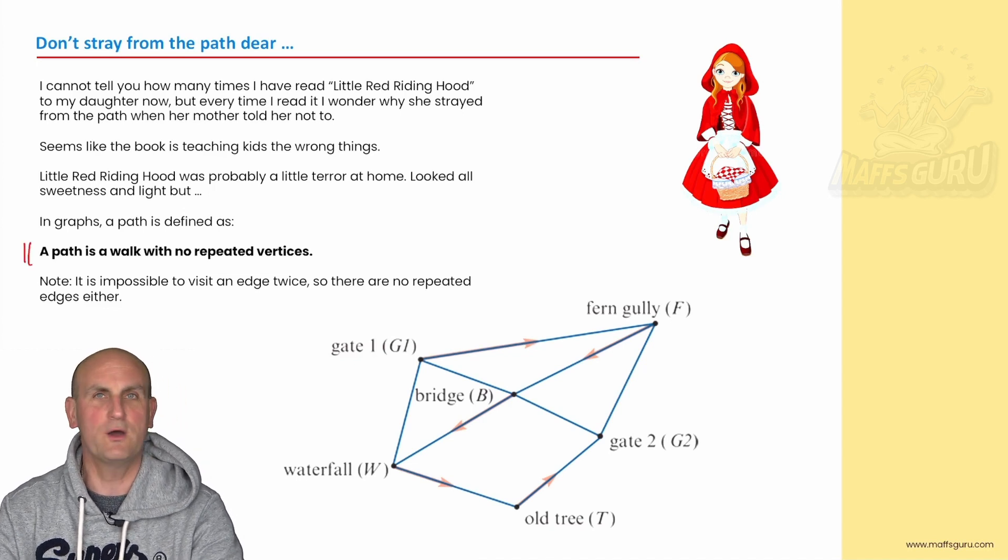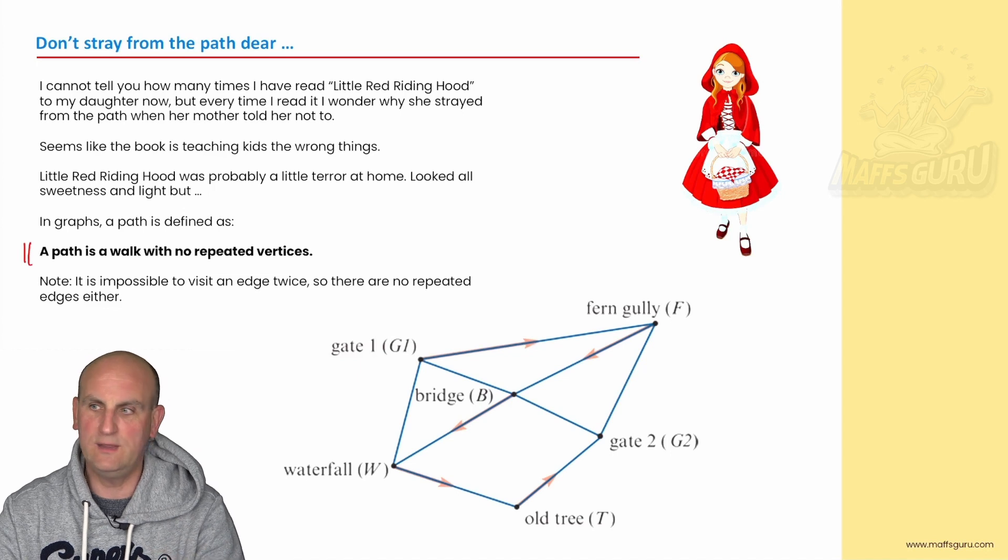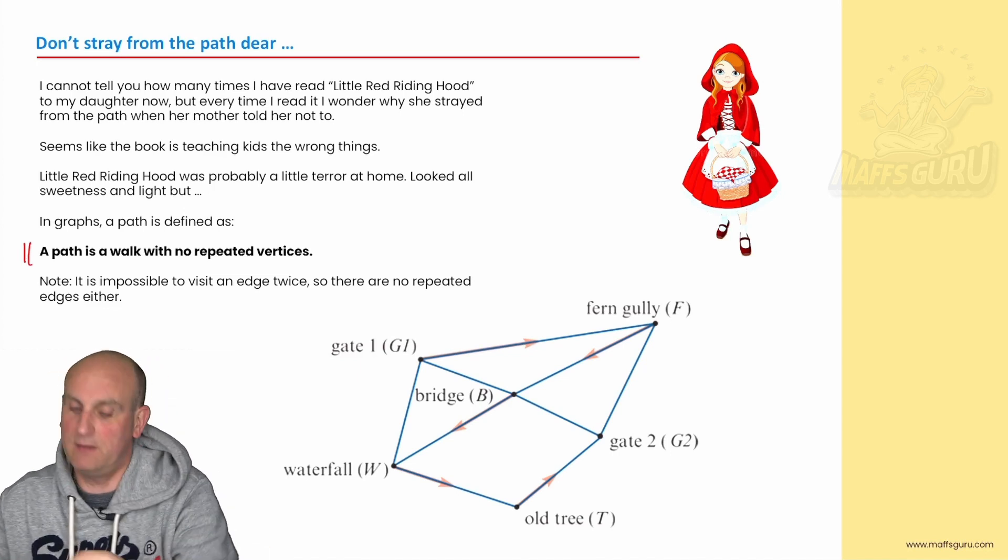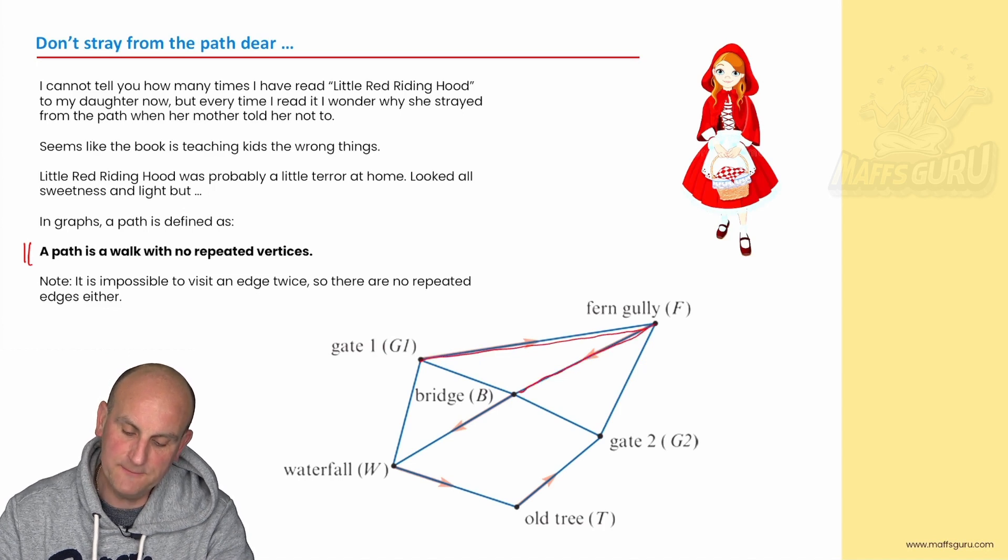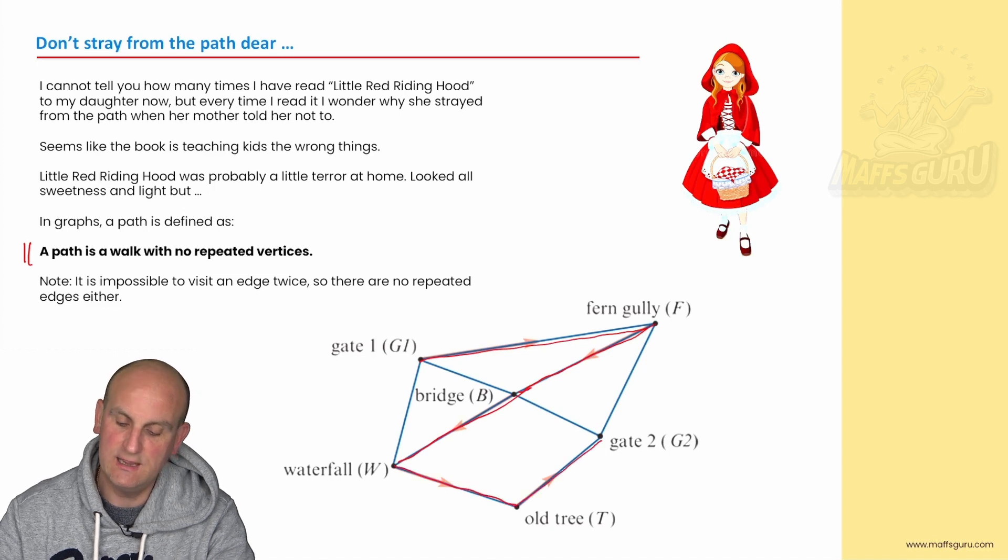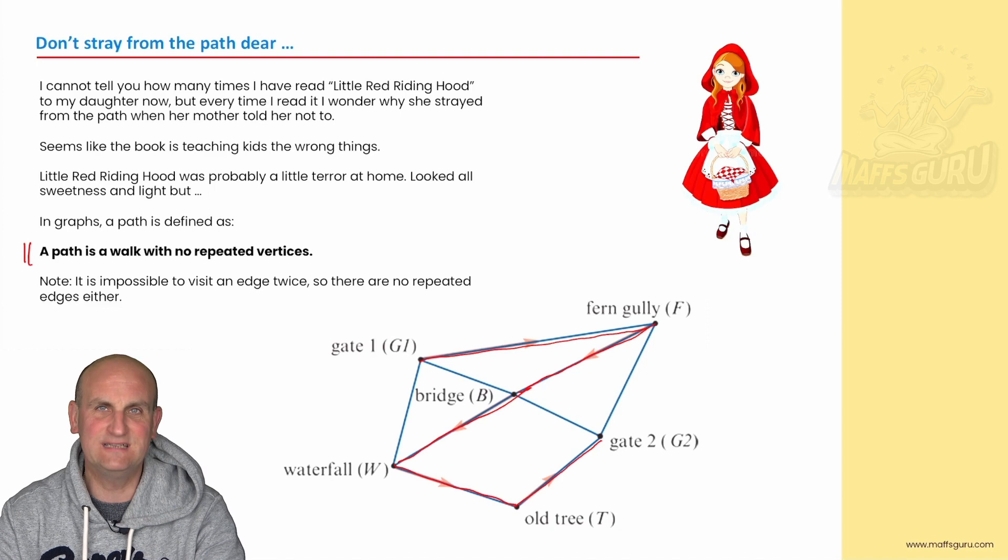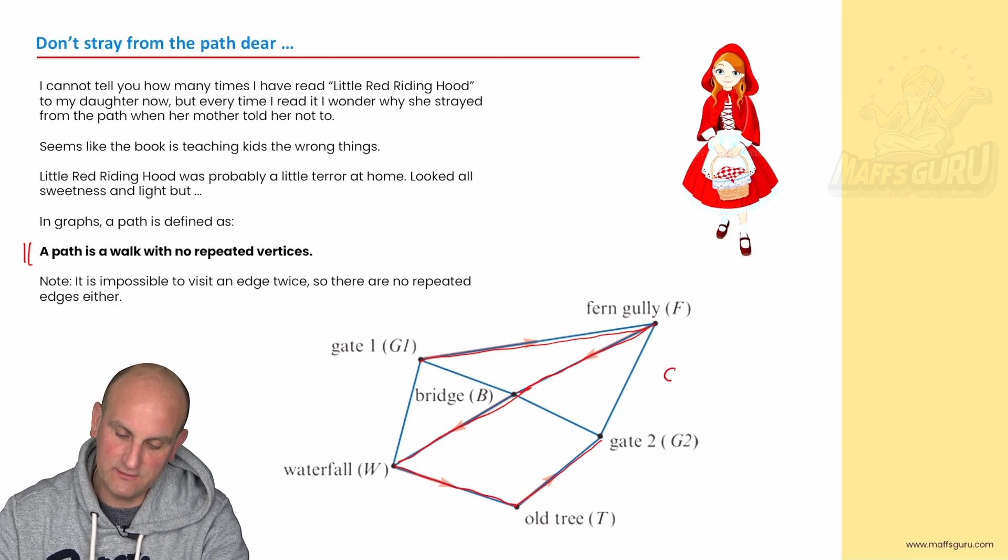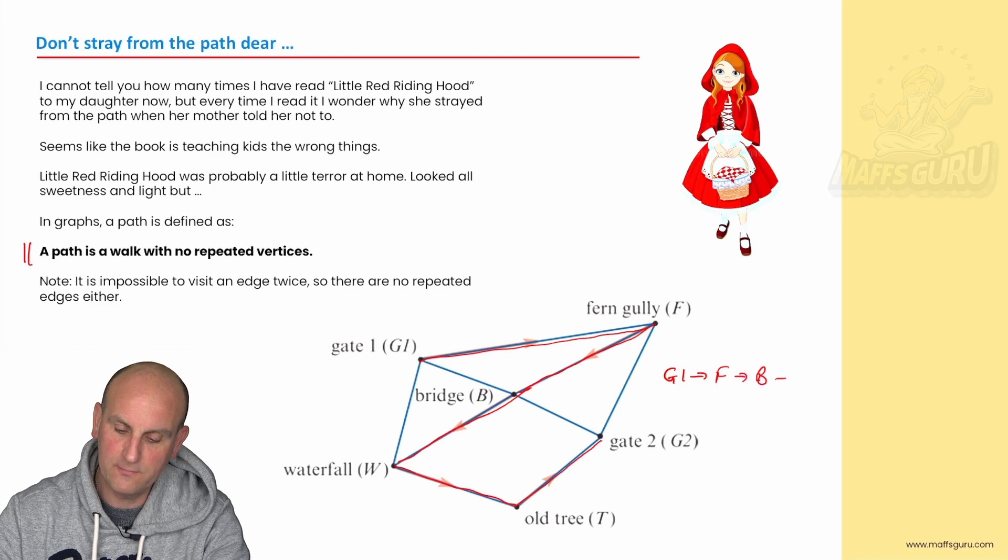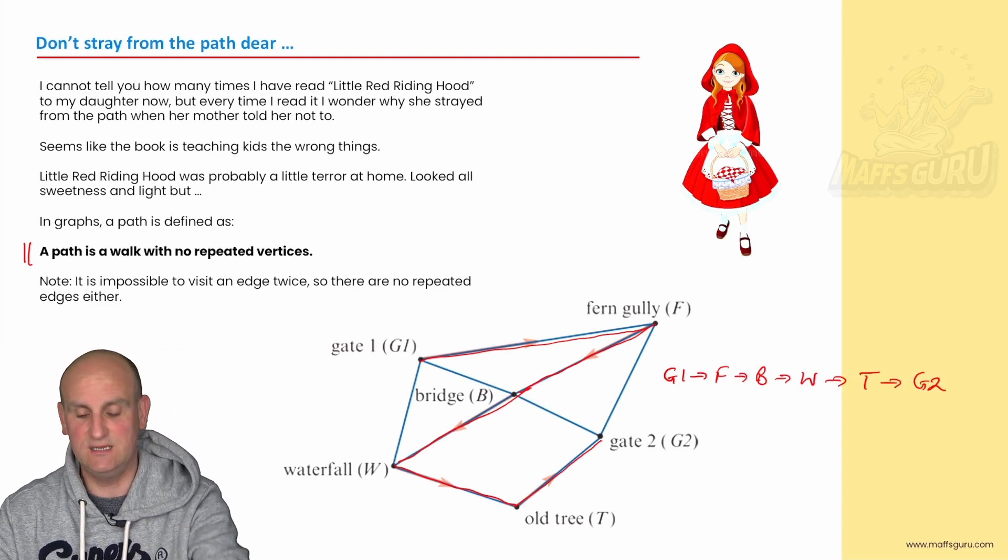Now back to the maths. A path is a walk with no repeated vertices. Oh hold on a moment. So we're now going to a walk. It's a walk. I'm heading out. Don't have to go where I'm going. But now I can't repeat vertices. So let's just check. Is this diagram going to work? I'm going from G1. I'm going to F. I'm going to B. I'm going to W. I'm going to the old tree. And I'm finishing at G2. Beautiful. I haven't repeated any vertices. Now you're going to turn around and say well how do they examine this? They'll literally give you a diagram and they'll ask you is it a walk, a path, a circuit, a cycle, a trail. And you've got to be able to work this out. There are ways to help. So if I was going to write this out this would be G1 to F to B to W to T to G2. This isn't difficult. Please tell me you're not finding this difficult. And you are writing it in your summary book.